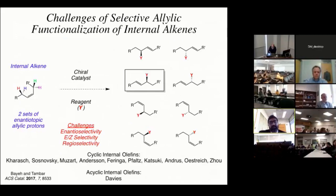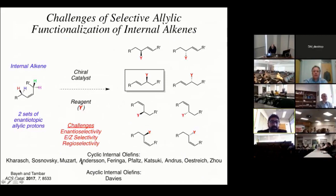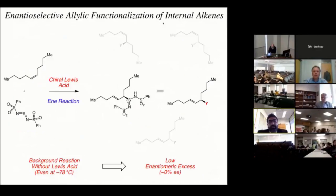The problem with internal alkenes is that you've multiplied the challenges. Not only do you have to address enantioselectivity, but also E/Z-selectivity because the product itself is an internal alkene. And if you start off with an unsymmetrical internal alkene where R and R' are not the same, you also have to address what I think is perhaps the most challenging issue: regioselectivity — distinguishing between constitutional isomers. Perhaps the only general effective way to realize stereoselective and regioselective functionalizations of acyclic internal alkenes has been worked on by Hugh Davies' lab.